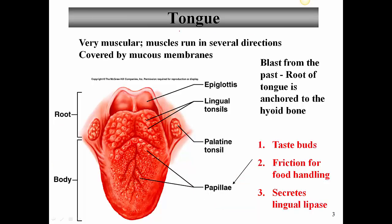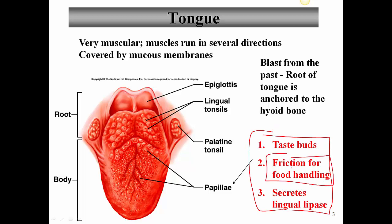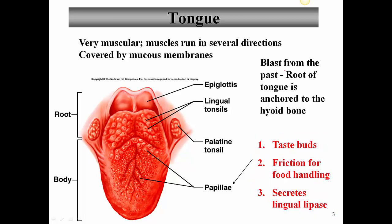Now let's talk more about the tongue. The tongue houses the taste buds, which allows us to taste food. It also provides some friction for food handling, and it secretes something called lingual lipase — an enzyme that digests fats. The tongue is anchored to the hyoid bone at the back. It's a very muscular organ with muscles running in several directions, and it has both intrinsic and extrinsic muscles, all covered by mucous membranes.